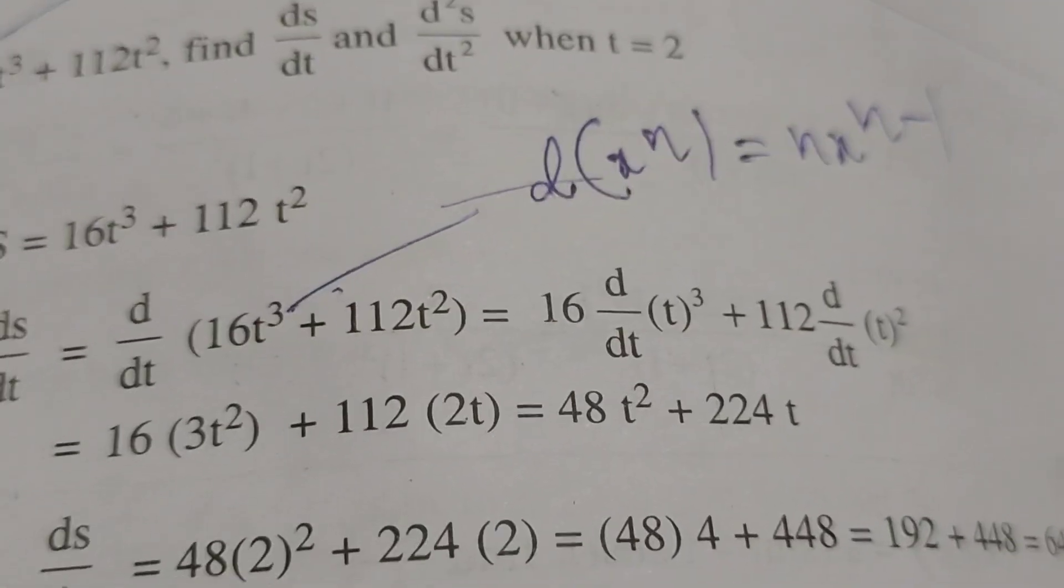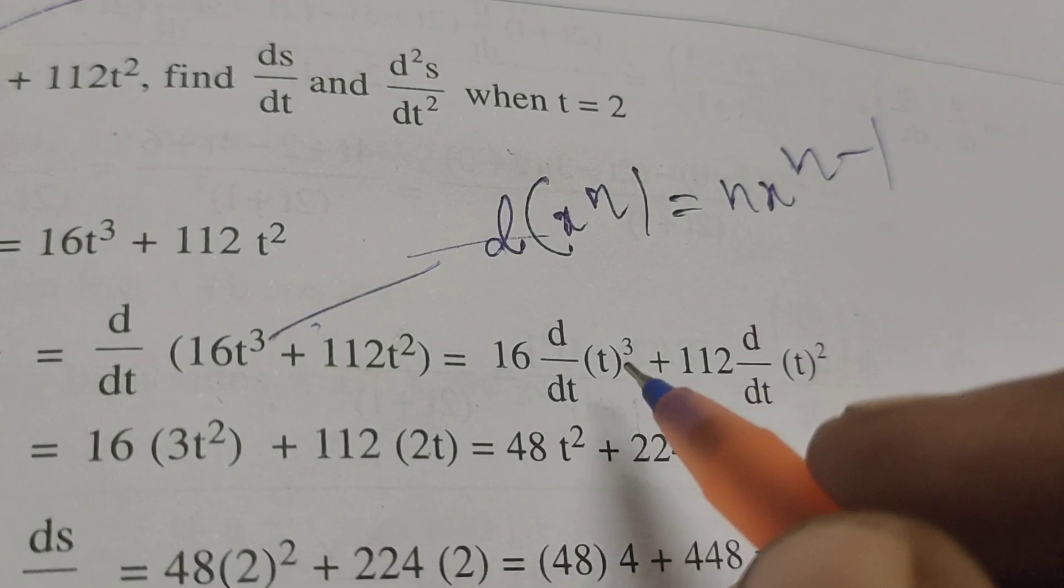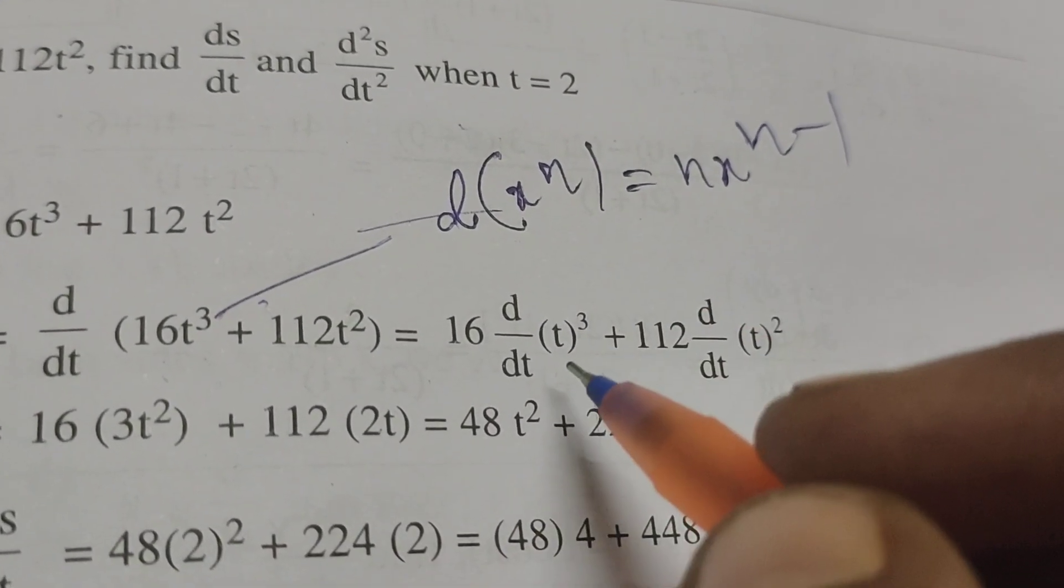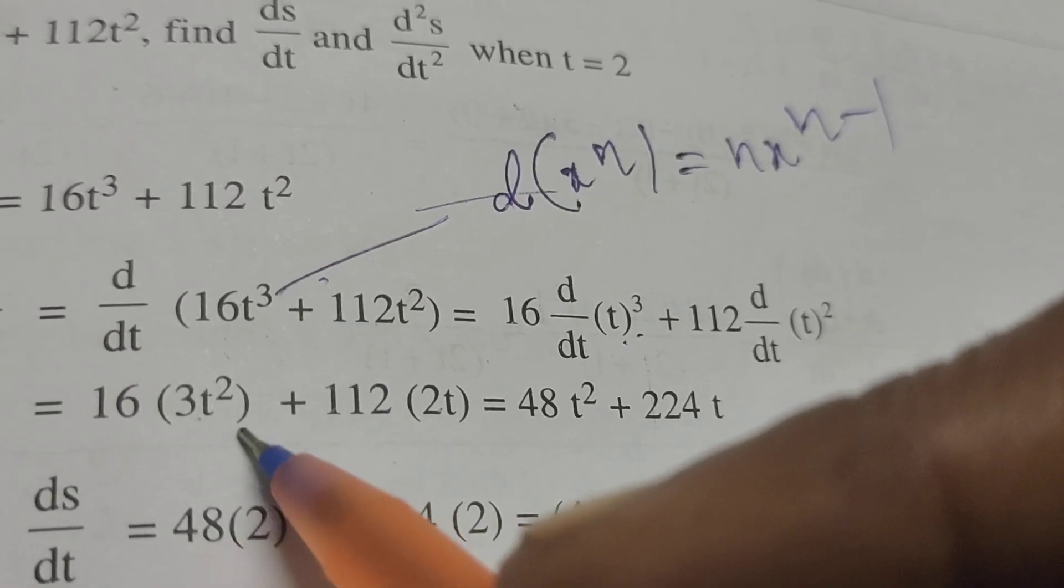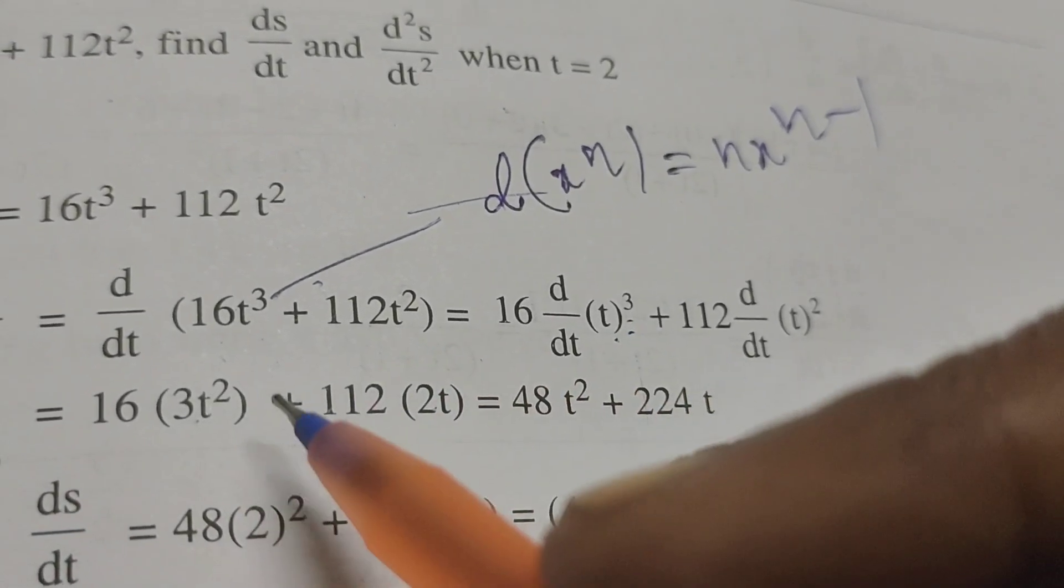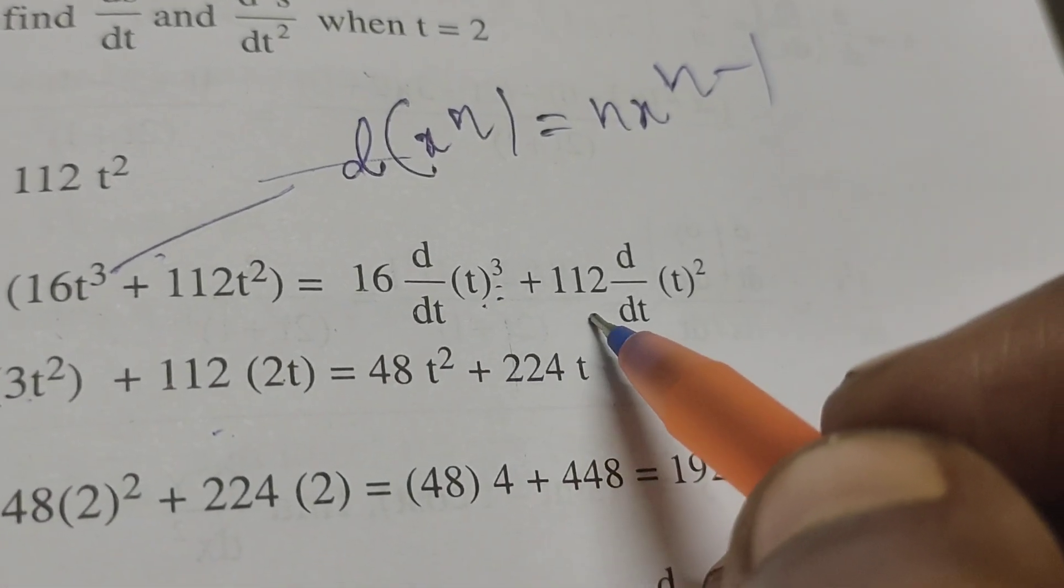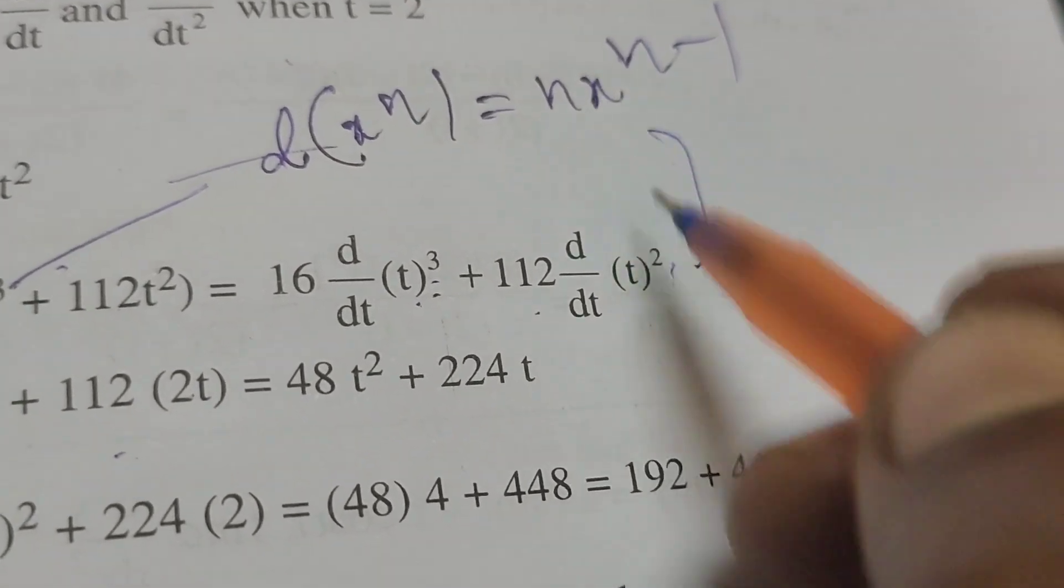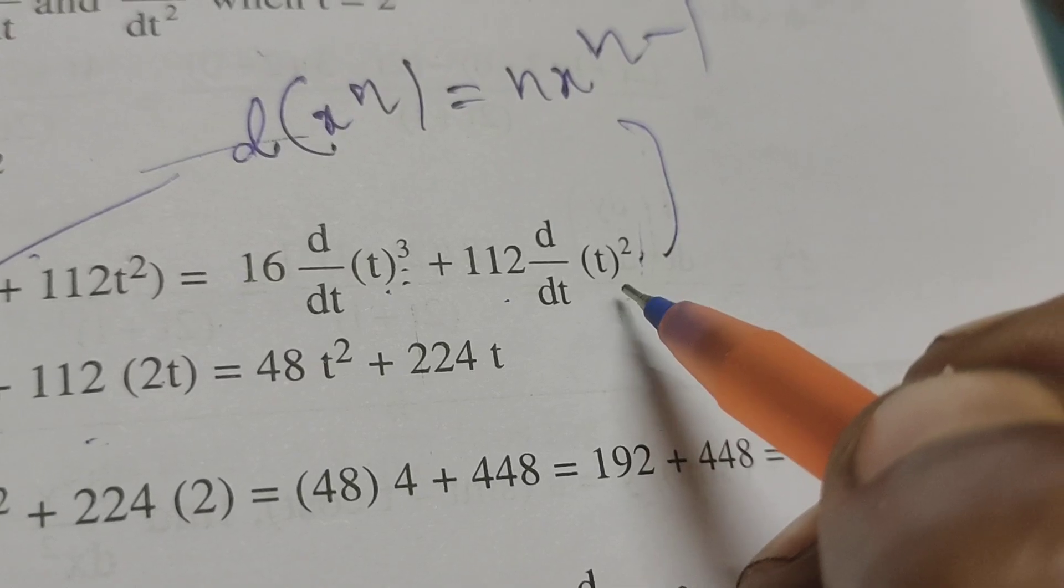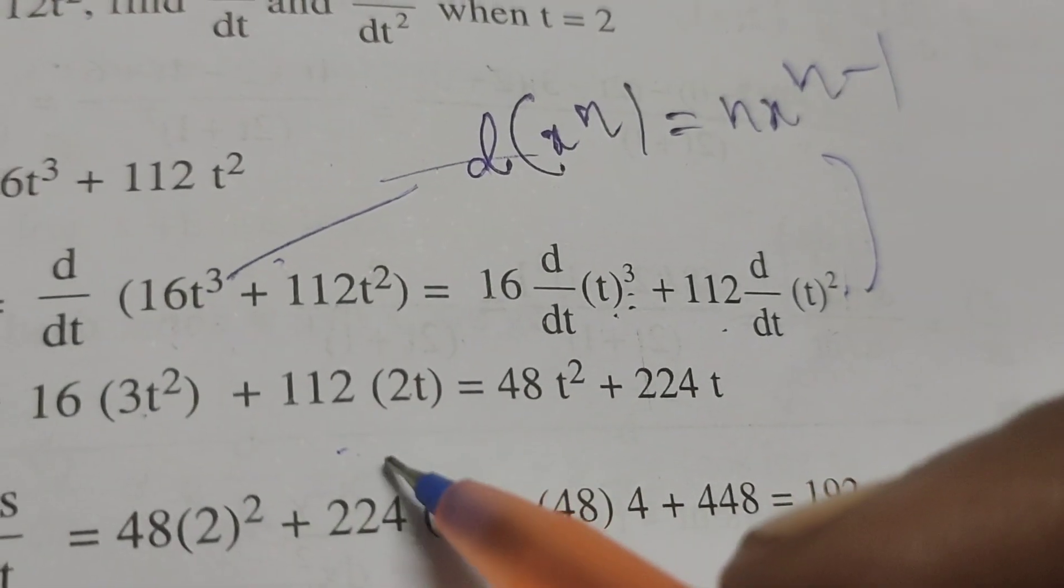Here n equals 3, so we get 16 times 3t^(3-1), which is 16 times 3t². For the second term 112t², we use the same formula with n equals 2, giving us 112 times 2t^(2-1), which is 112 times 2t.